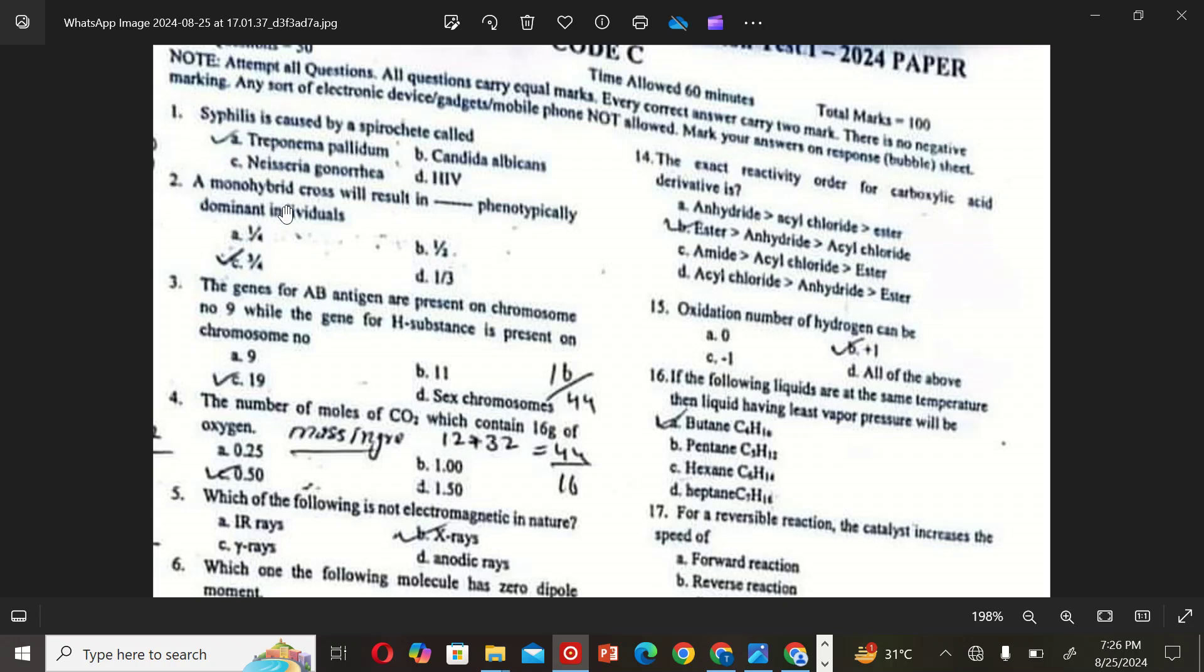The next MCQ is: A monohybrid cross will result in phenotypically dominant individuals. The correct option is C. The next MCQ is: The gene for AB antigens are present on chromosome number 9, while the gene for H substance is present on chromosome number A9, B11, C19, and D6. So the correct option is C19.